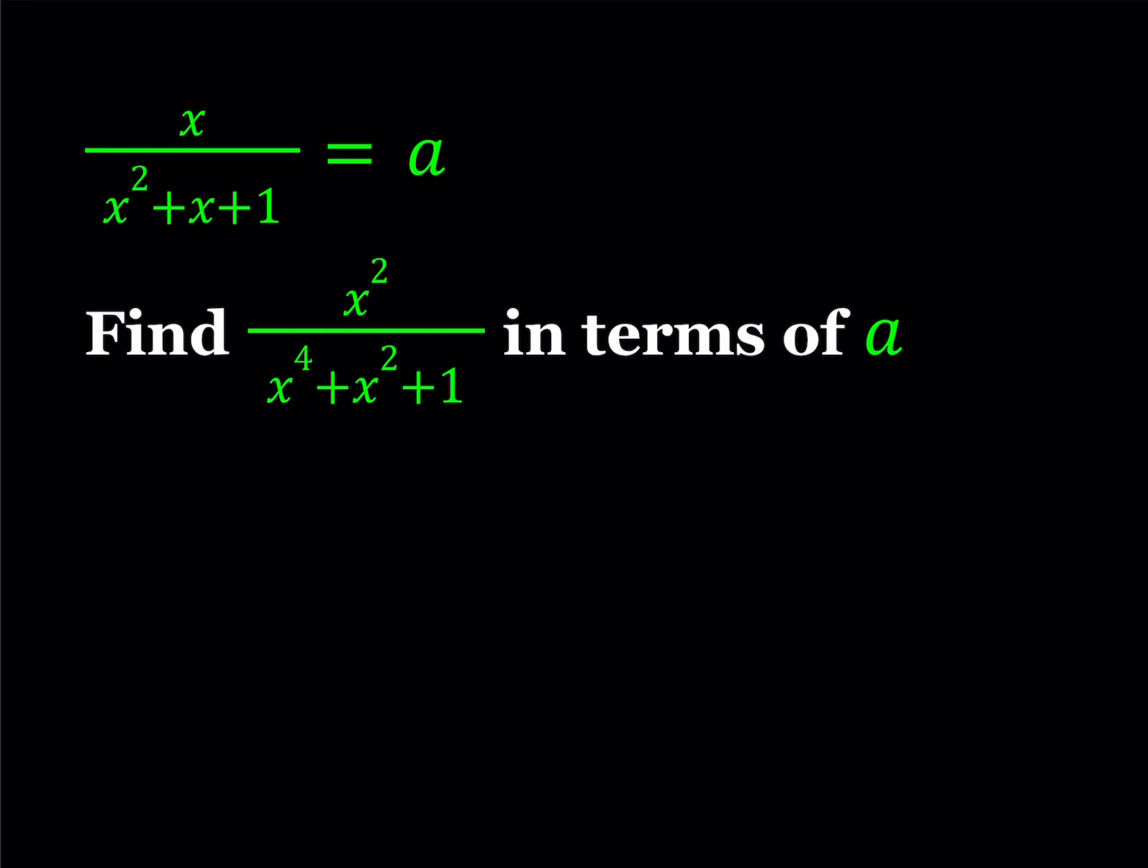So we're given that x divided by x squared plus x plus 1 equals a, a being a real number or a given number. And we're supposed to find x squared divided by x to the fourth plus x squared plus 1, and the answer needs to be in terms of a, which is our original expression.